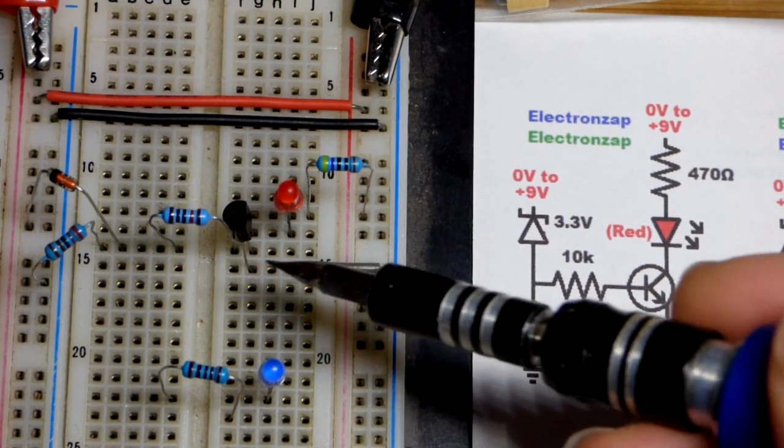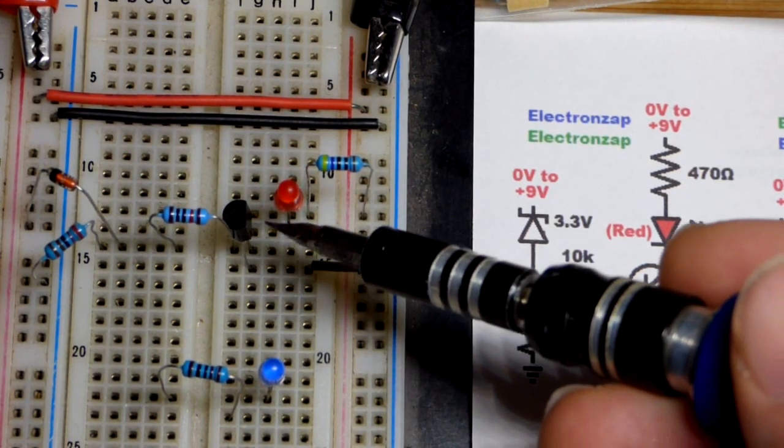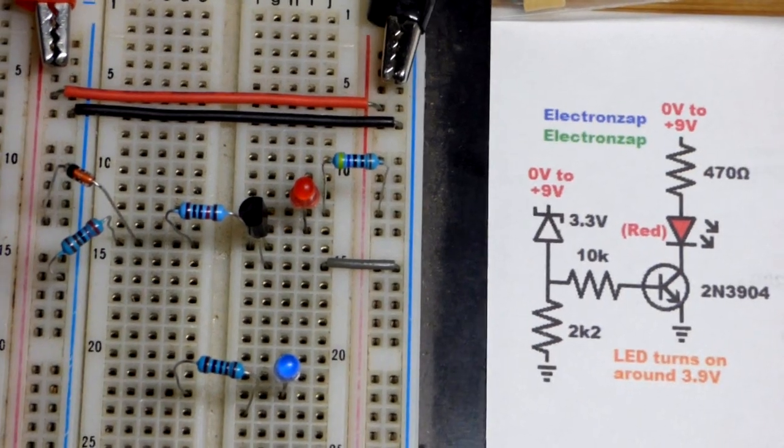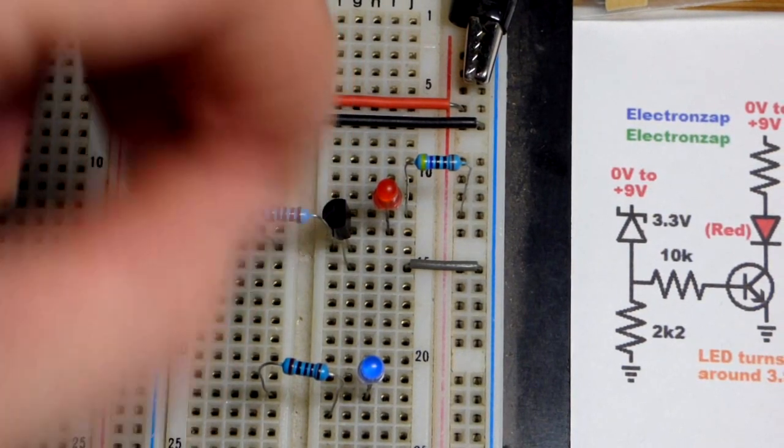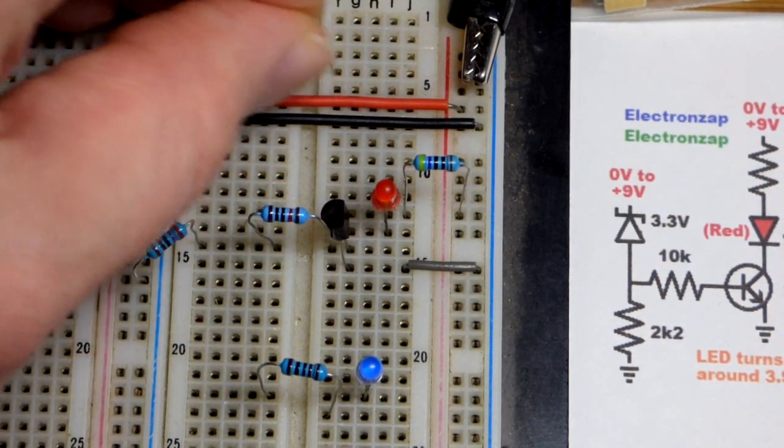So it's facing to the right there. So emitter at the bottom, base in the middle and collector on top. So as I said before, let's swap the zener diode first.